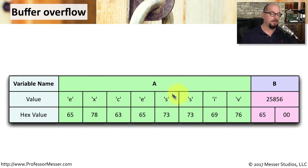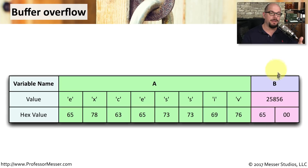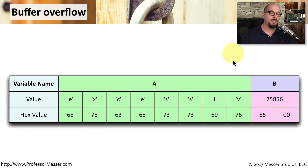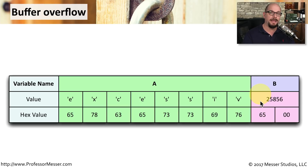So the bad guys will write into variable A 9 bytes of information — the word 'EXCESSIVE'. That final letter E is written into the first byte of variable B, something that should not happen if you're writing information to a single variable. This has now changed variable B to be the value 25,856, very different from the original value. You should not be able to write information into variable A and have it change something in variable B. Now the bad guys will take advantage of this, trying to write different things into variable B to see if that provides them access they would not normally have into your system.